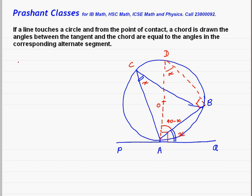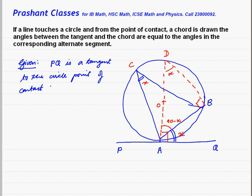So if you start writing it, we have to write everything. So we write given. Given PA is a tangent to the circle, point of contact is A. To prove, we have to prove that angle BAQ equals angle ACB. AB is a chord.